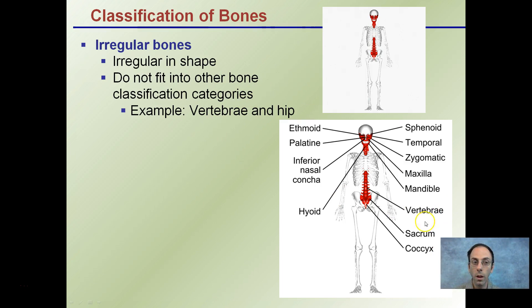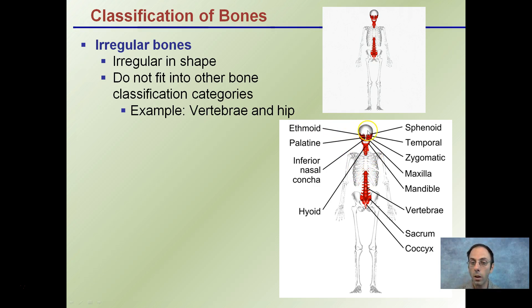Lastly, our irregular bones — these have an irregular shape, that's how they get their name. They really don't fit into any of the other bone classification categories — they're the odd ones of the group. The vertebral column would be a prime example of that. They're not long bones, they're not short bones — they're irregularly shaped. It's more than just the vertebral column; some portions of the hip and some of the head region can also be classified as irregular bones. Hopefully this gives you a basic overview of some of the classifications of bones by their individual and unique shapes.